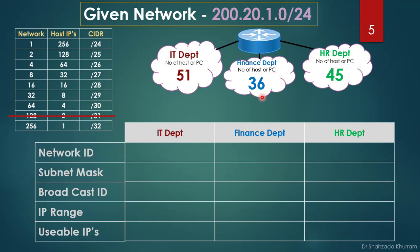We need three networks. Looking at the network column of our table, three is less than four but more than two, so it falls in the block for four networks. For host IPs, the highest requirement is 51, which is less than 64, so all departments fit within a block of 64 IPs. This means we use /26 with 64 hosts per subnet.